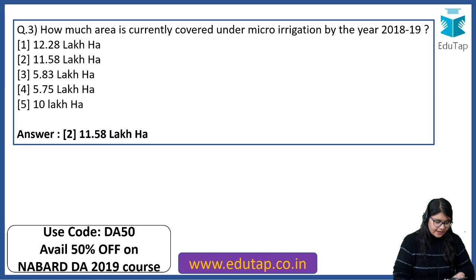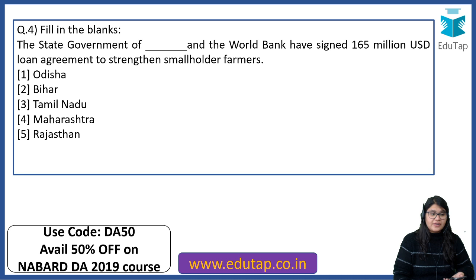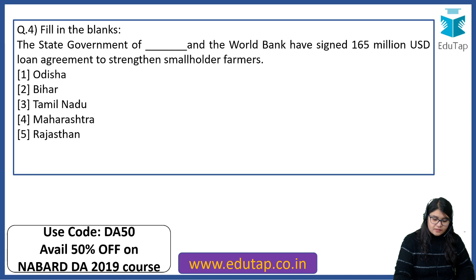The fourth question is a fill in the blank: the state government of blank and the World Bank have signed a $165 million loan agreement to strengthen smallholder farmers. The right answer here is Odisha.